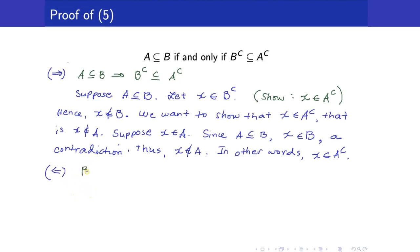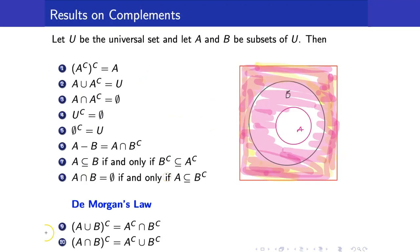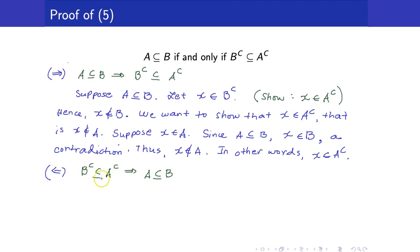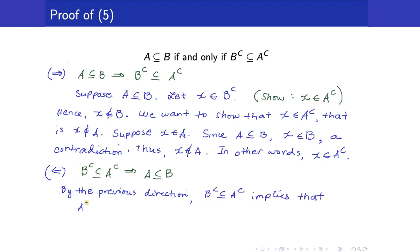Next, we want to show that if B complement is a subset of A complement, then A must be a subset of B. In order to prove that, we will make use of part 1 — the complement of the complement of a set is equal to the original set. I have a subset relationship here, so I will use this part. Remember, this is saying that if one set is a subset of another set, then when you get the complement, the order will change. So by the previous direction, B complement being a subset of A complement implies that when you get the complement, the order will change, and so we have that A is a subset of B. That takes care of this direction.